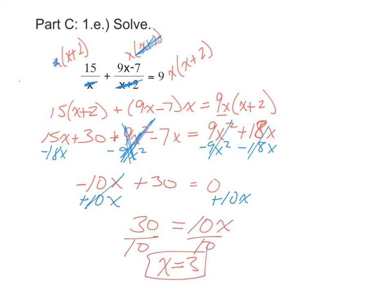Now before you leave the problem, you should look back and see if this 3 makes any of the fractions undefined. So we go and plug it back in, and we'd have 15 over 3 plus 9 times 3 minus 7 over 3 plus 2.